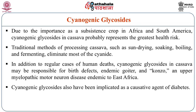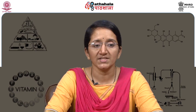Due to the importance of cassava as a subsistence crop in Africa and South America, cyanogenic glycosides in cassava represent the greatest health risk for those populations. Cyanogenic glycosides have also been implicated as a causative agent of diabetes in some research studies.